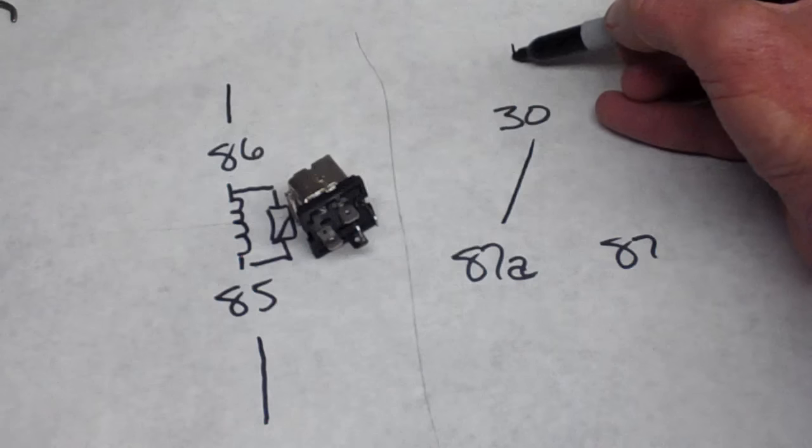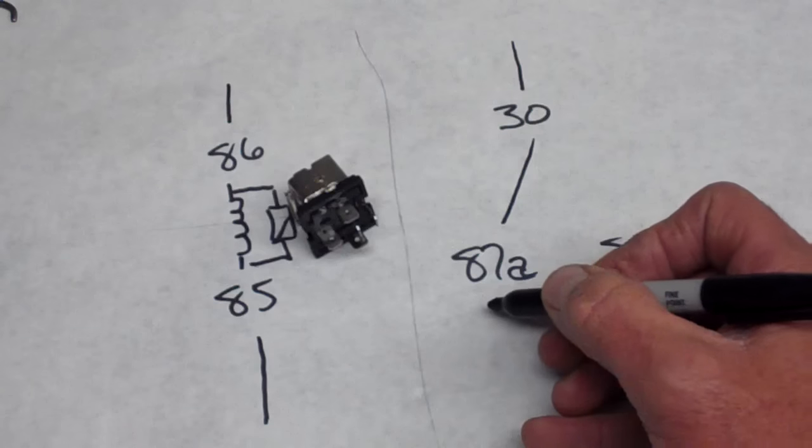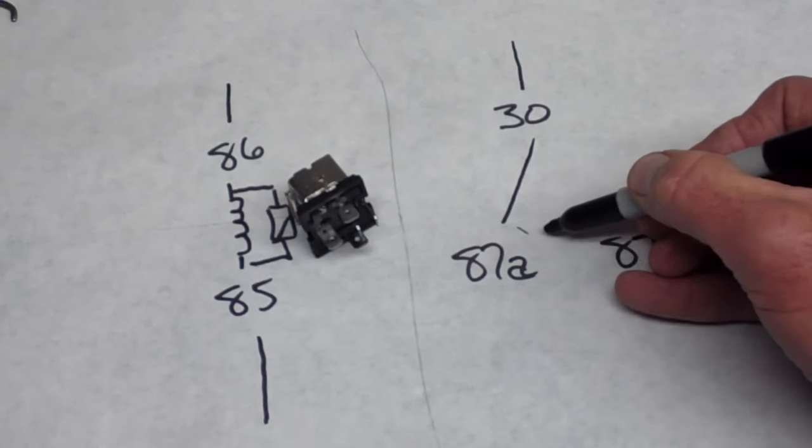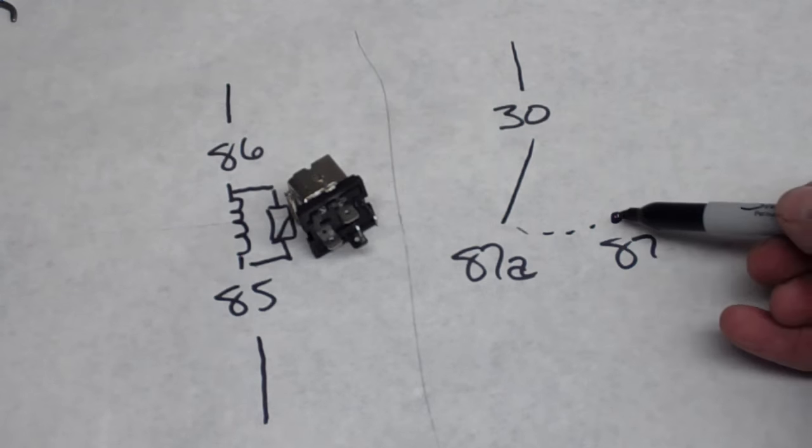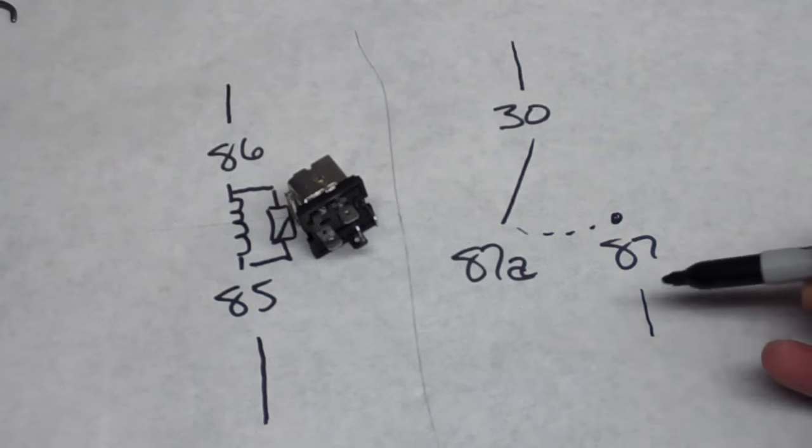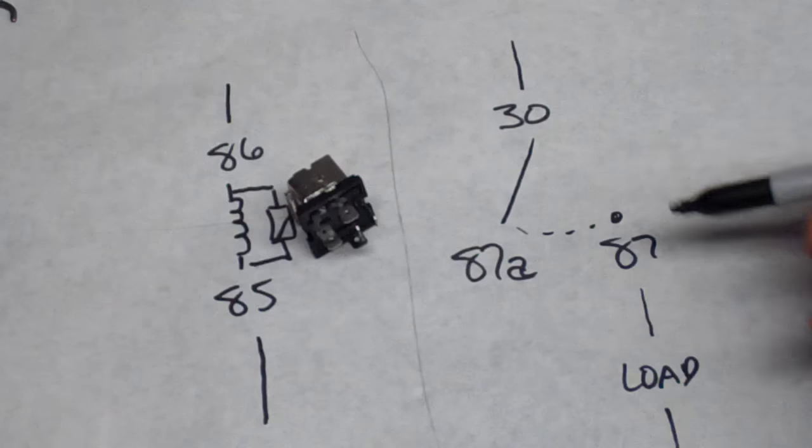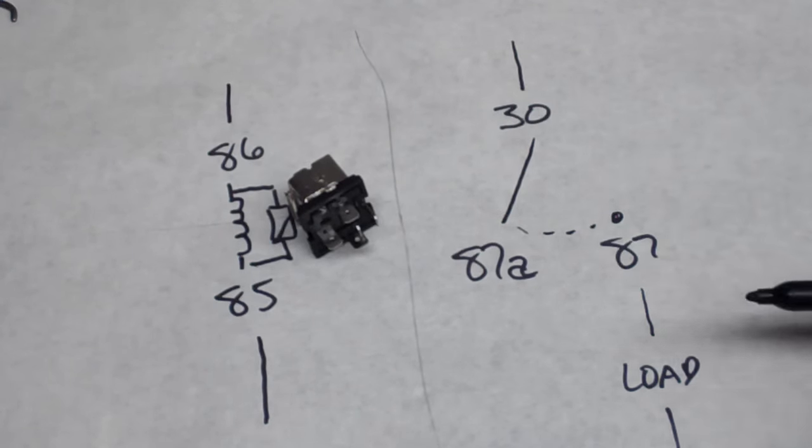I have voltage in, and then here I could put a load on 87A if I wanted. That's generally not what you see. Generally, what we have is our load over here at pin 87. So now I've got my load, whatever it may be. Maybe it's a nitrous solenoid, electric water pump, electric fuel pump, whatever.